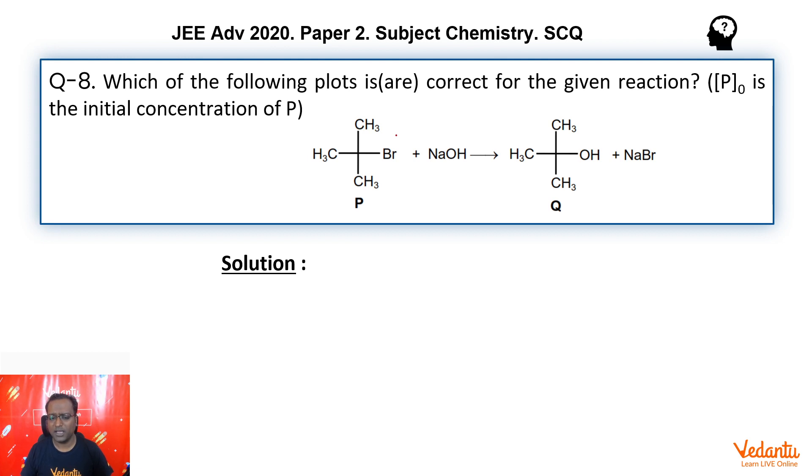Now, we are given this very simple reaction. Tertiary butyl bromide reacts with NaOH to give tertiary butanol plus NaBr. Now, we know that guys, tertiary butyl bromide is a very stable system when it comes to carbocation formation. So, what is going to happen here is we are first going to get a carbocation and Br minus separates away.